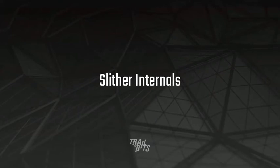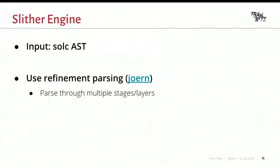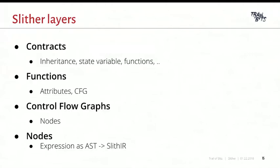Now let's go into more detail on how Slither works internally. Slither takes the AST from the compiler and recovers a lot of information using what's called multi-pass parsing, where the AST is parsed in multiple stages. Each layer adds a new kind of information — first recovering what contracts exist, their inheritance, their functions, and so on. Then for each function, recovering attributes, control flow graphs, and more. At the end, we have all the information about contracts, functions, and nodes, and we convert the Solidity expressions to our intermediate representation, called SlithIR.